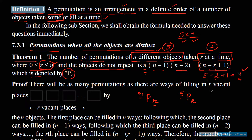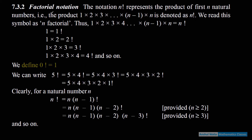अब जब rose वाला case था, तो उसमें 4P4 बनेगा, क्योंकि हम चारों letters में से सारे ले रहे थे — taken all at a time। So it is number of permutations of four different objects taken all at a time. Next is factorial notation — यह समझना बहुत ज़रूरी है permutations के लिए।